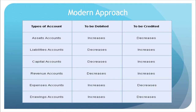Now if we follow the modern approach, that is the American approach, the types of accounts are: assets, liabilities, capital, revenue, expenses, and drawings accounts. Assets account will be debited when there is an increase — for example, if we purchase a table, the asset increases, so that account will be debited. If we pay cash, the asset account decreases, so it will be credited. For liabilities, if there is a decrease in the liability, we will debit it.